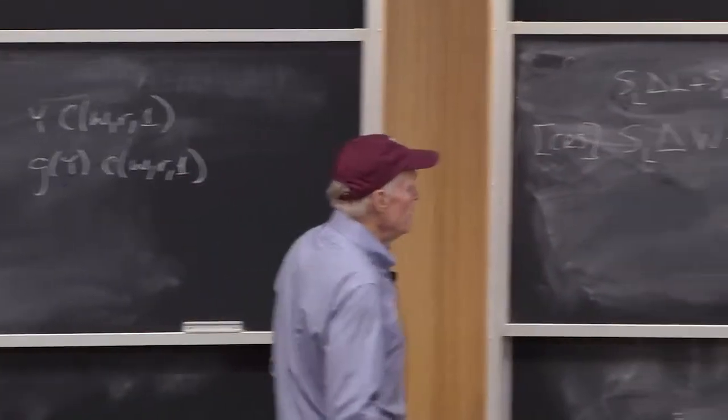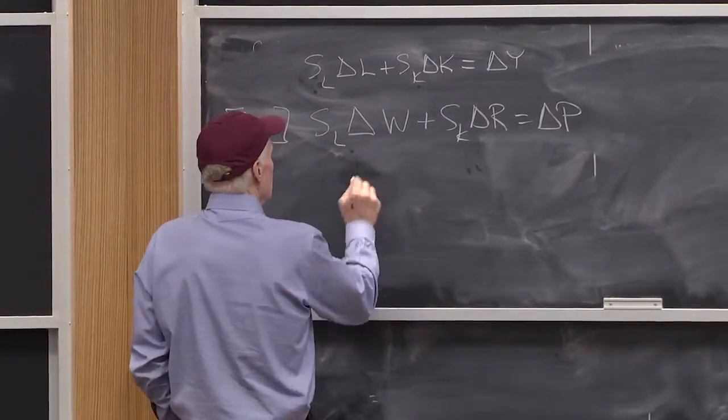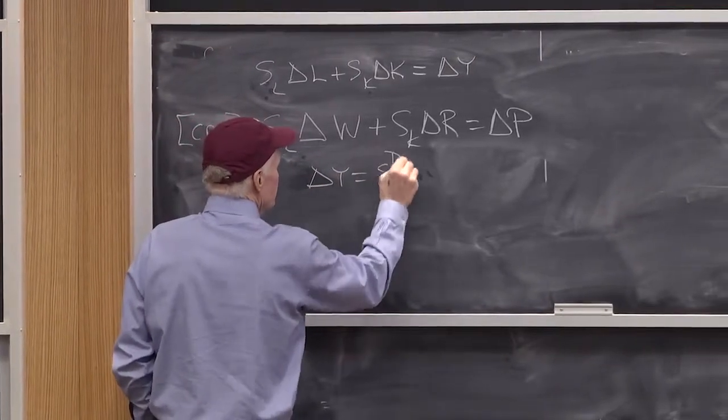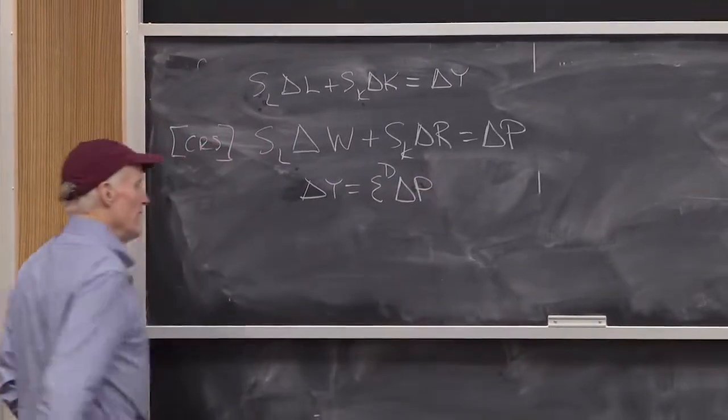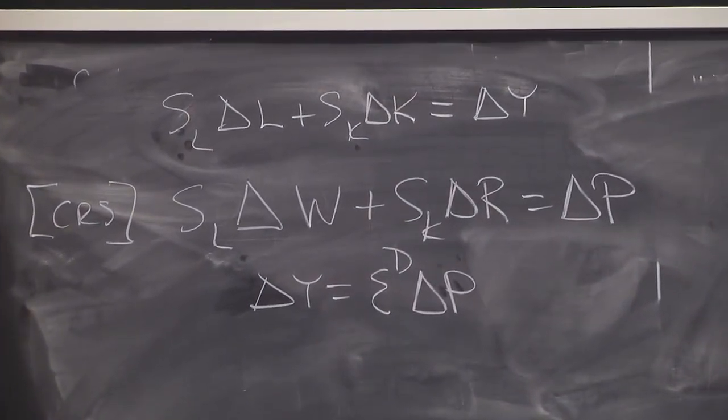Then, our next equation was delta Y equals elasticity of demand delta P. That's just saying we're just going to move along the industry demand curve. That was our third equation.